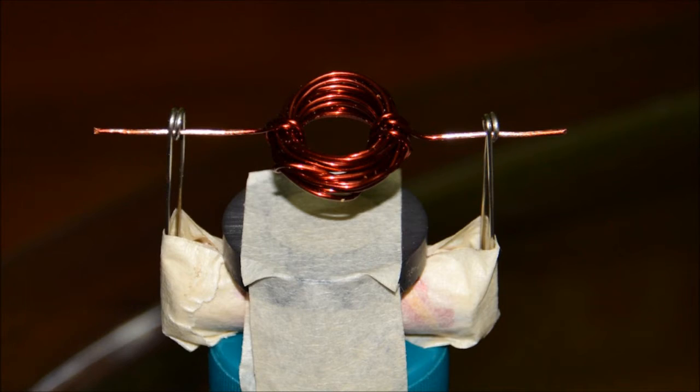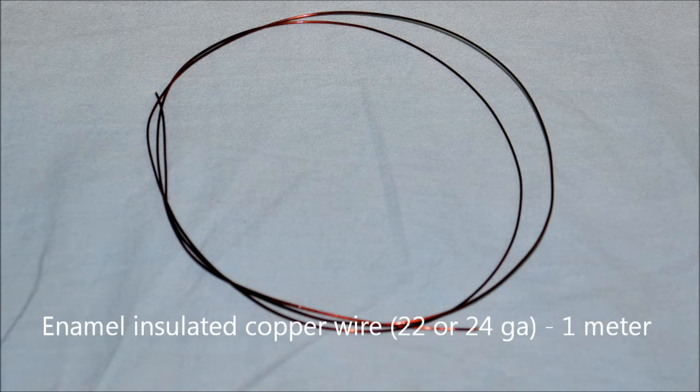What does it take to build a motor? You would need enamel insulated copper wire of say 22 or 24 gauge in thickness, and we would need about 1 meter of that.